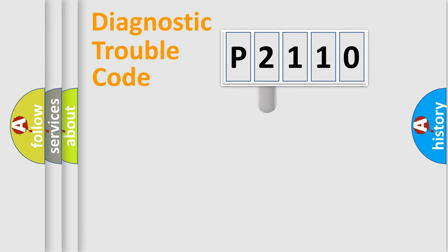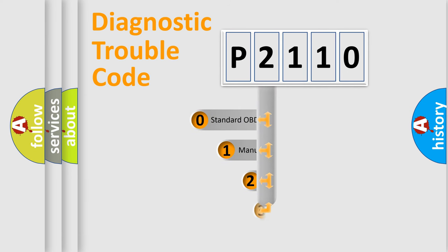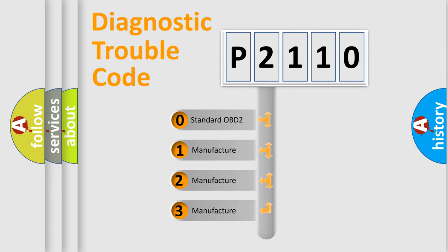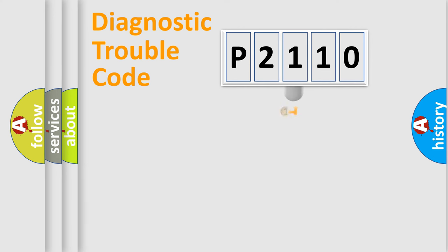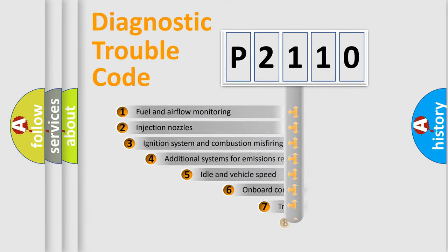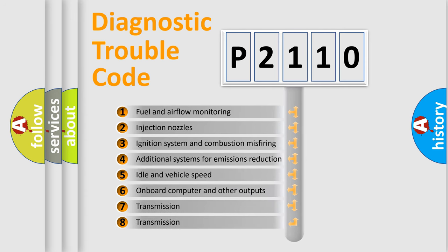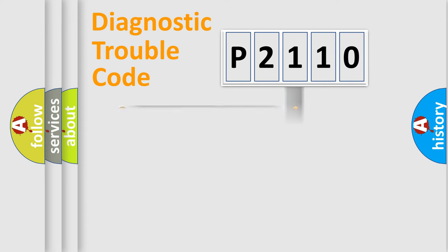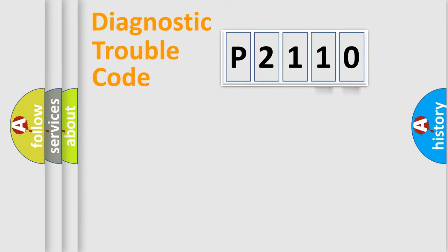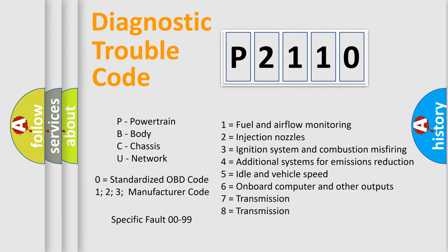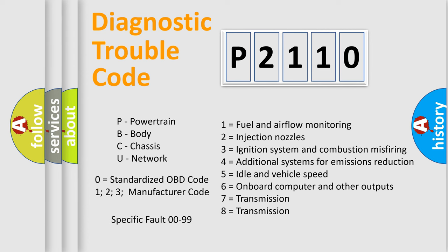This distribution is defined in the first character of the code. If the second character is expressed as zero, it is a standardized error. In the case of numbers 1, 2, or 3, it is a more specific expression of a car-specific error. The third character specifies a subset of errors. This distribution is valid only for the standardized DTC code, and only the last two characters define the specific fault of the group.